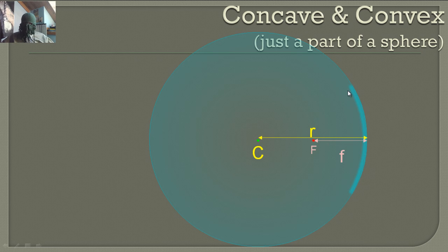Concave — think of an actual cave in the side of a hill — it goes in. This one would be a concave mirror. If it's angled the other way, it would be a convex mirror. You've probably seen these in grocery stores or gas stations, in the corner, so people can see objects that are actually around corners.